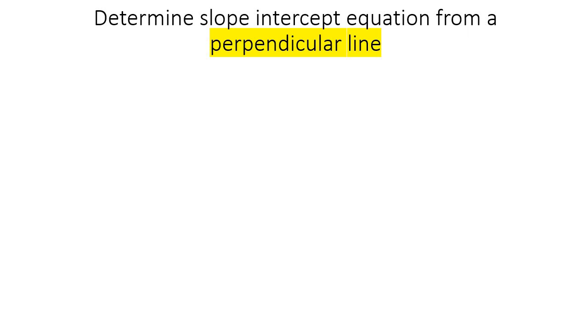In this lesson, we're going to learn how to find the slope-intercept form, which is y equals mx plus c. Your teacher might use a different letter here, like b, but it's the same thing.